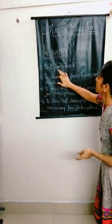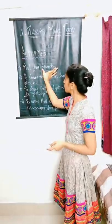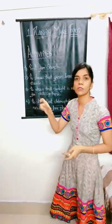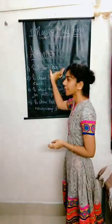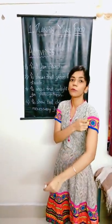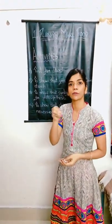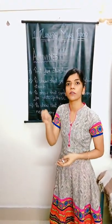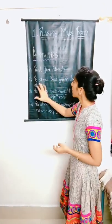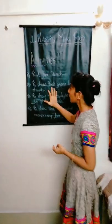There are four activities. The first activity is 'Test for Starch.' You are also familiar with the word starch. Starch is a food which is present in plant parts — leaves, roots, and flowers. The next activity is to show that green leaves contain starch.